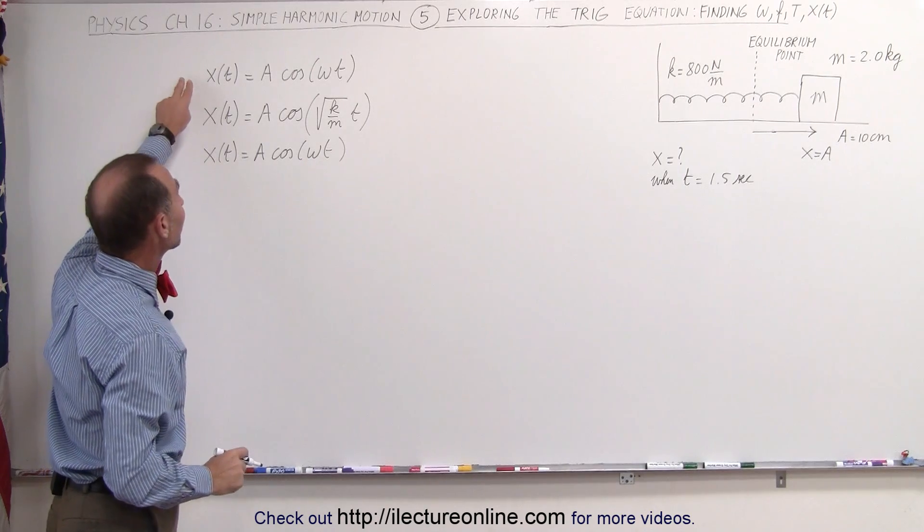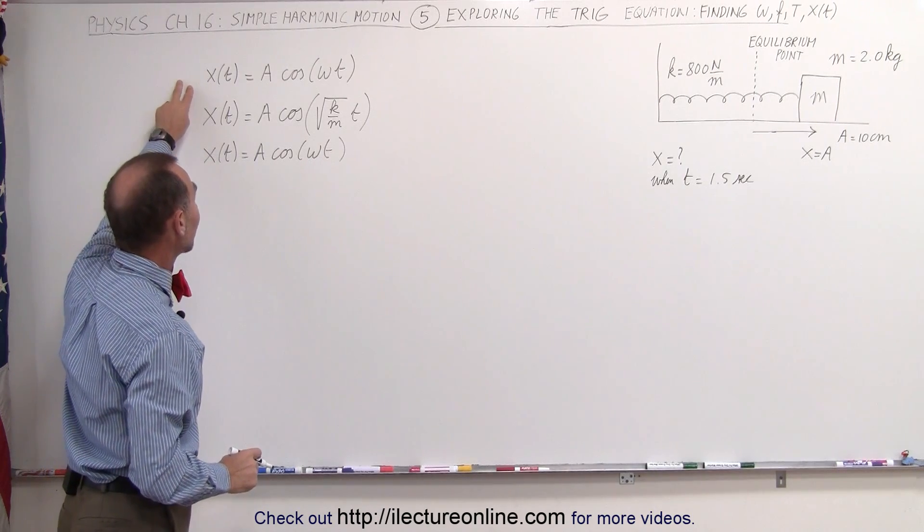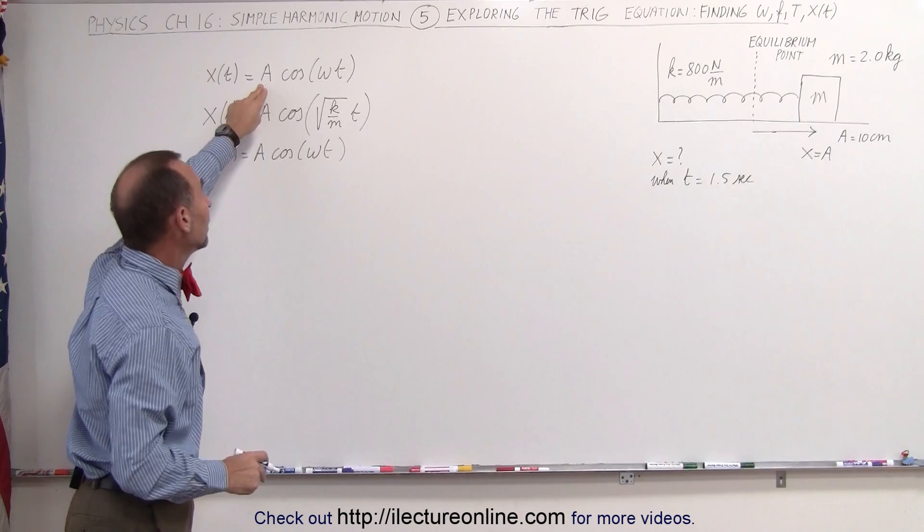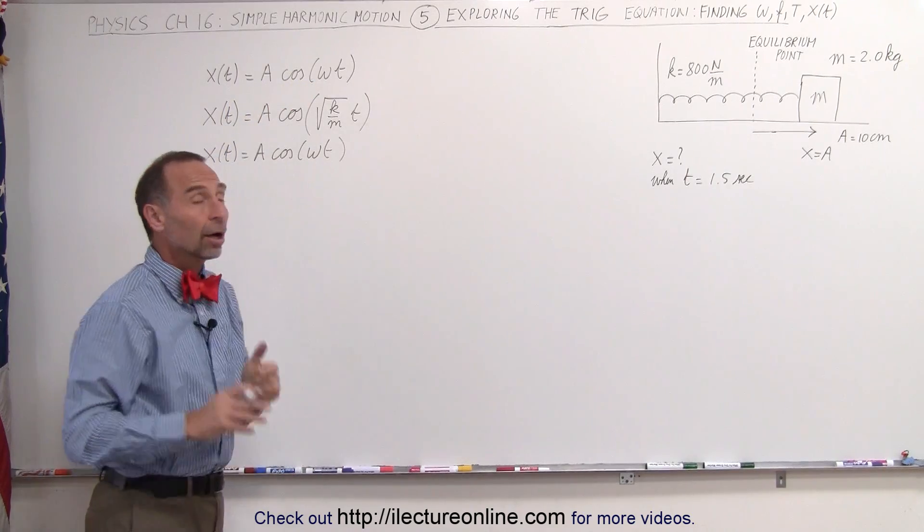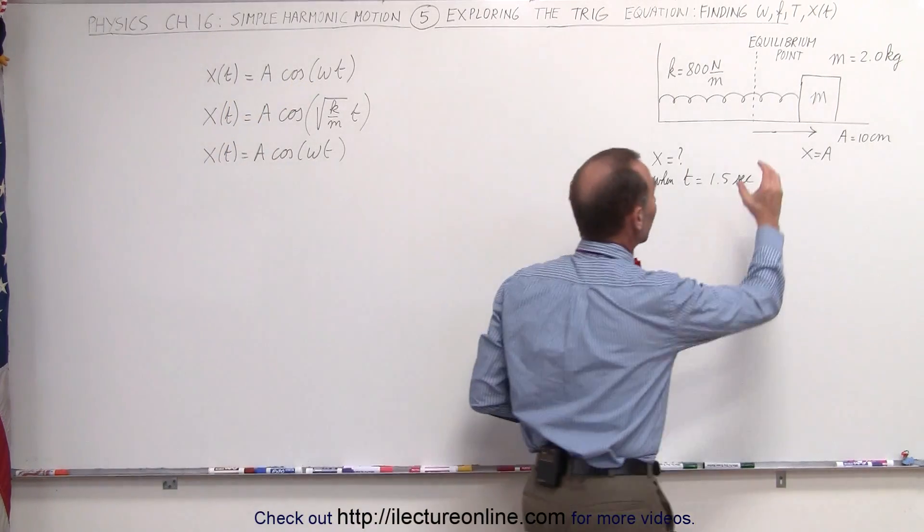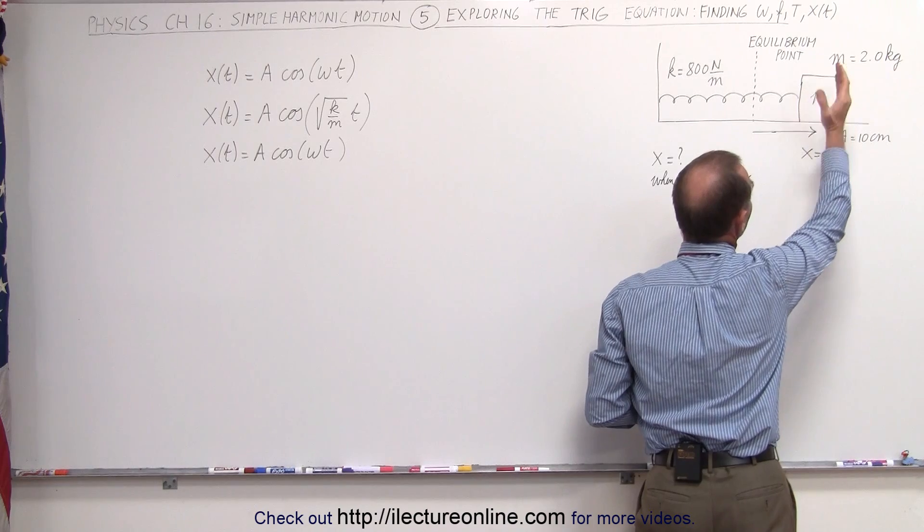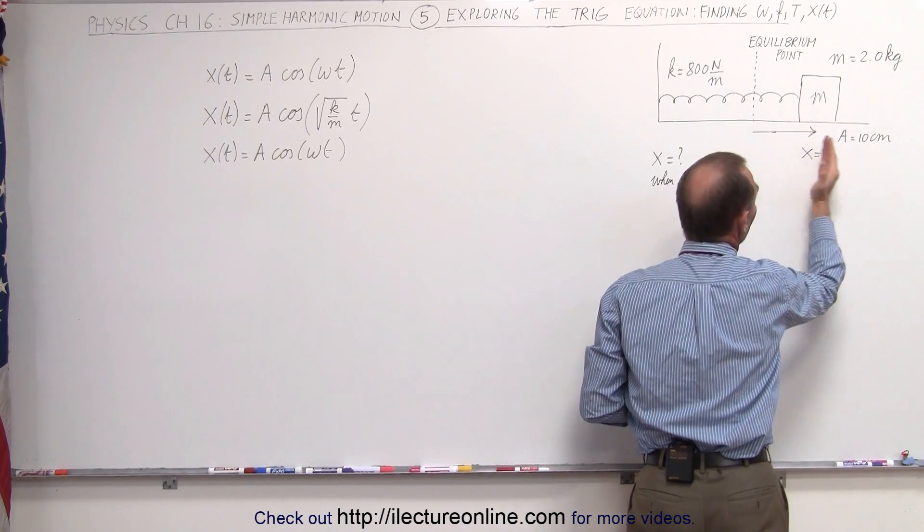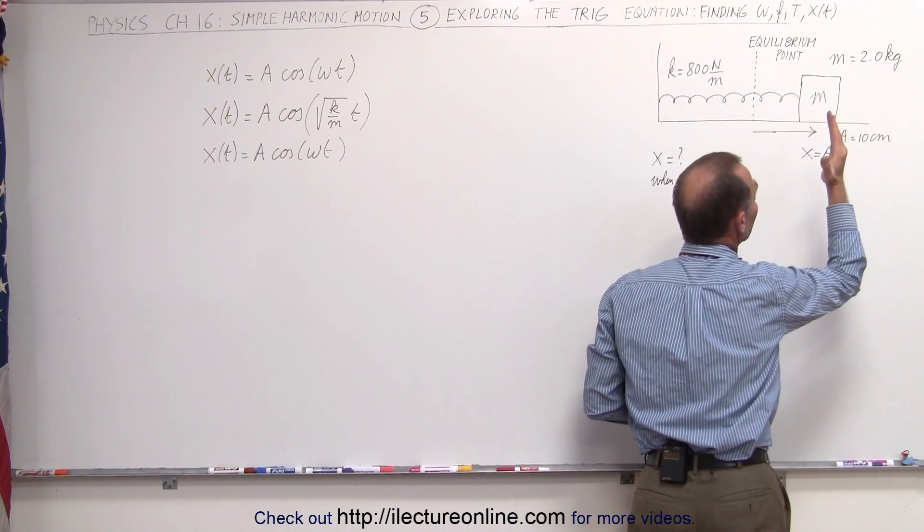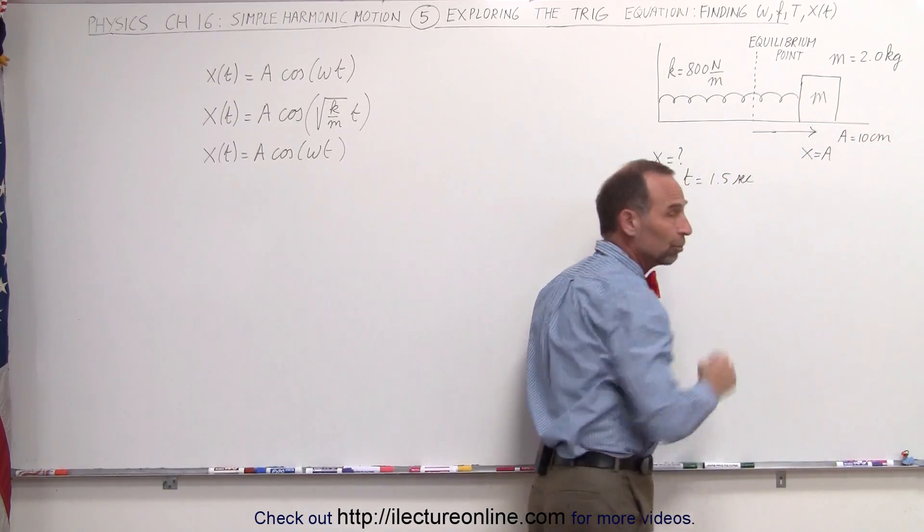The equation that defines the motion is x as a function of time equals the maximum displacement times the cosine of omega t, assuming that at t equals zero we've pulled the block out to its maximum displacement in the positive direction. At that moment when t equals zero we let go and the motion begins.